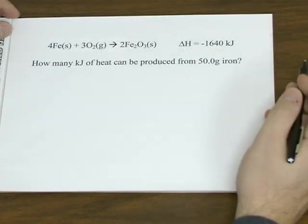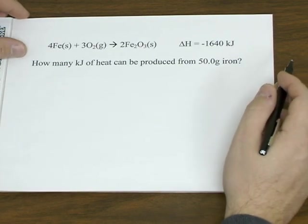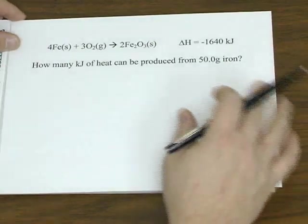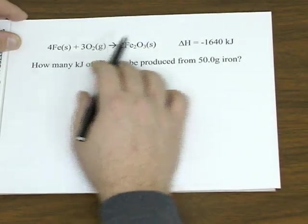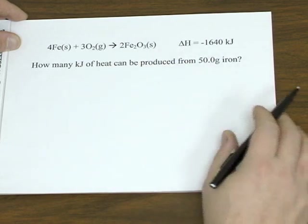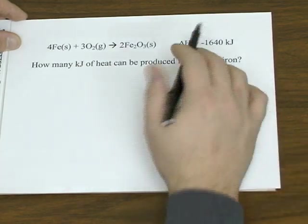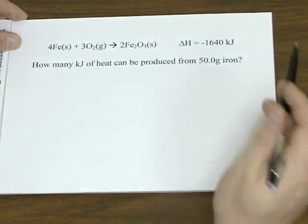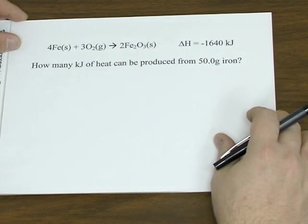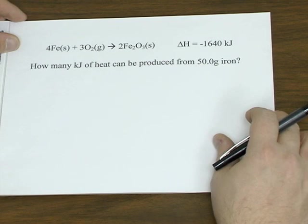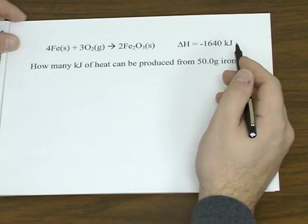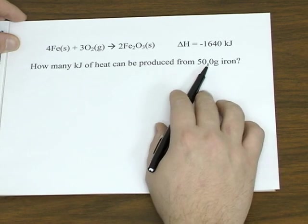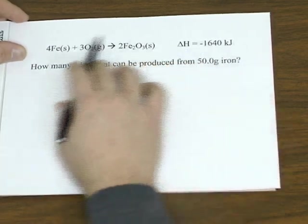Let's look at another example using a thermochemical equation. With a reaction of iron and oxygen to give you iron 3 oxide, and a given enthalpy change of negative 1,640 kilojoules. So let's see how many kilojoules of heat we can produce from 50 grams of iron according to this reaction.